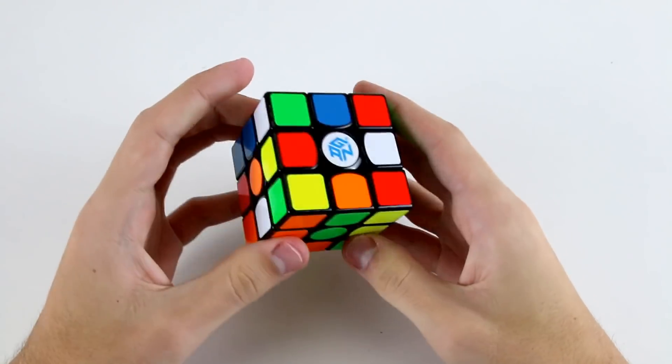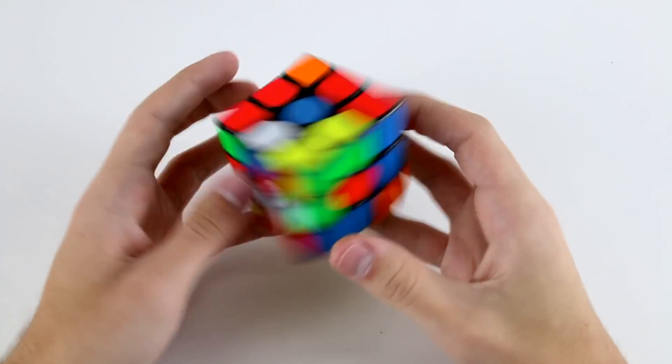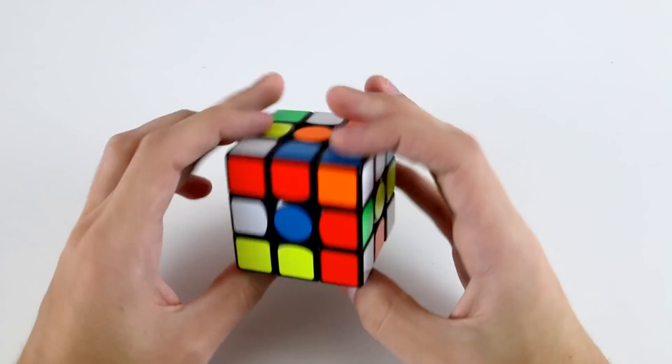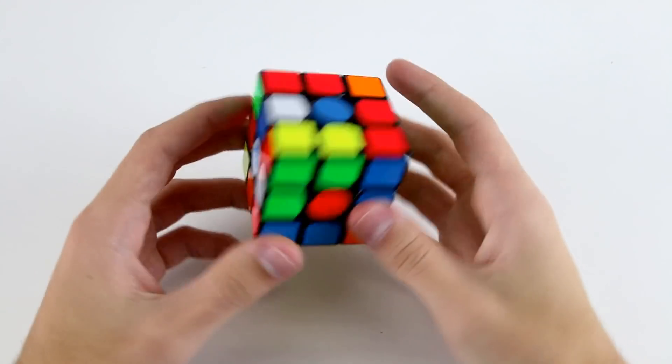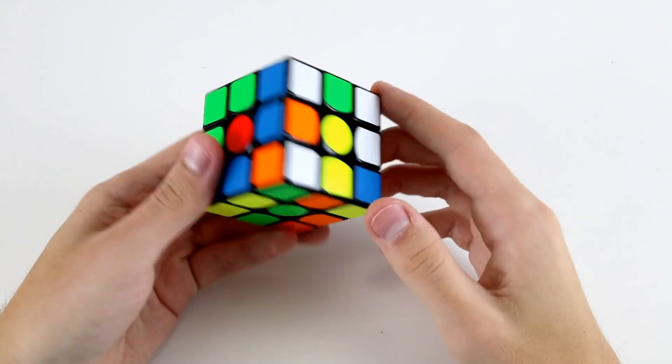The next three solves will be color neutral as always. We can have a look around to see what we have. I think probably the easiest cross to execute based off a quick look at the cube is green.